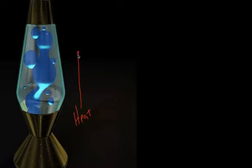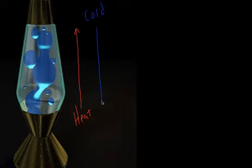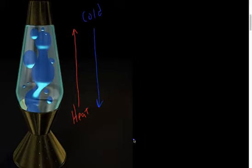To help us understand temperature's role, let's go back to our old friend the lava lamp. With the lava lamp, a heat source at the bottom causes material to rise. Then it gets cold because it moves away from the heat source, and that causes it to sink. This also applies to global surface currents.